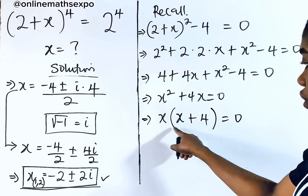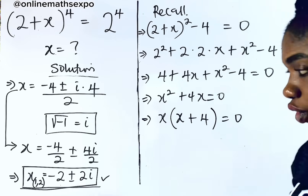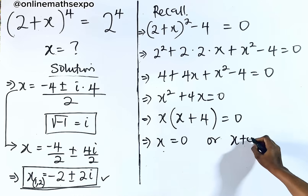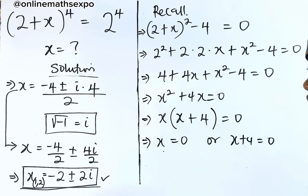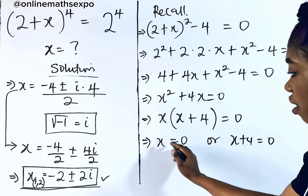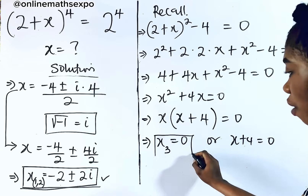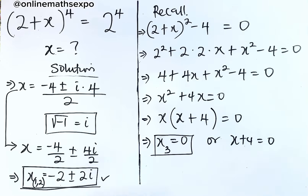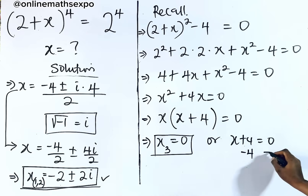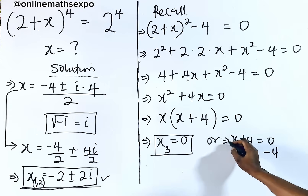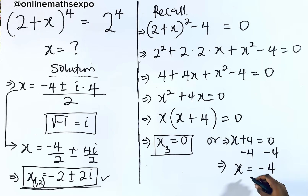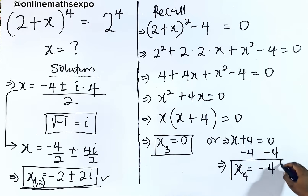Since two terms multiply to give 0, either x = 0 or x + 4 = 0. So x = 0 is the third value — this confirms our earlier inspection solution. Subtracting 4 from both sides of x + 4 = 0 gives x = −4, which is the fourth value.